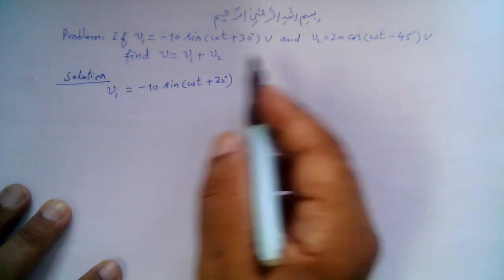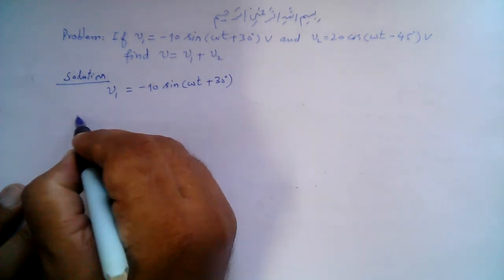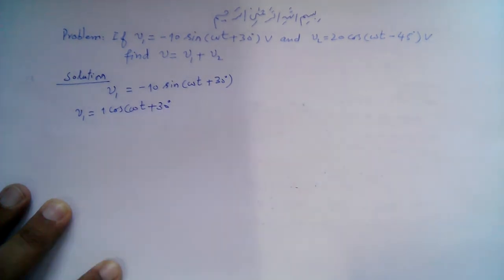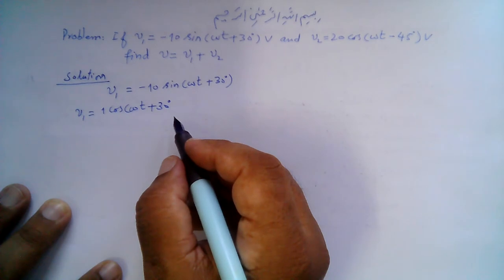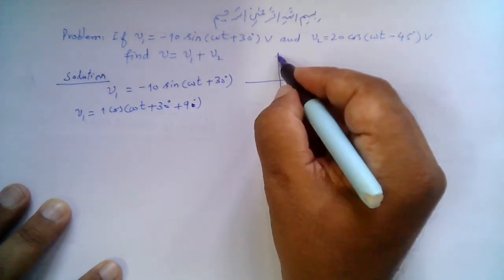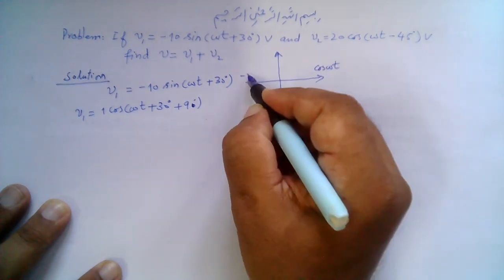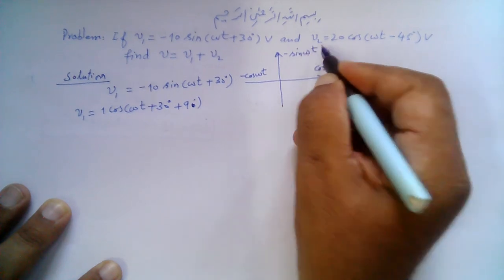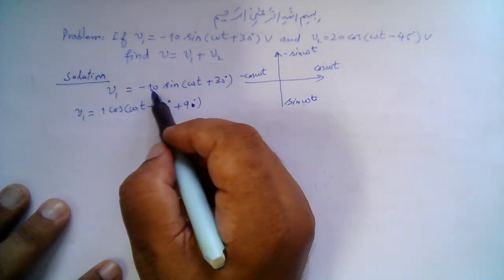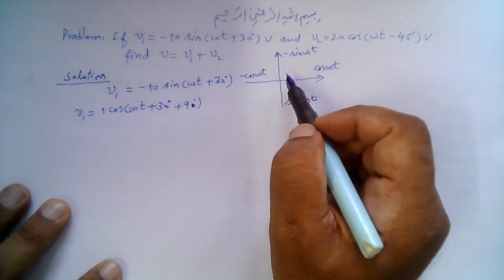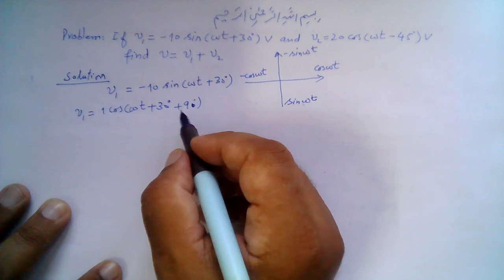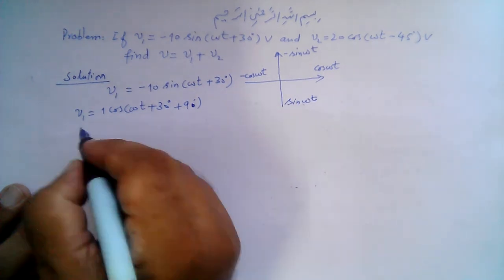Both phasors must be represented correctly. Consider this graphical function: cos(ωt), minus cos(ωt), minus sin(ωt), and plus sin(ωt). We are at minus sin(ωt), so this function is minus sin(ωt + 30°). For an equivalent cosine function at this position, we need to add plus 90 degrees.